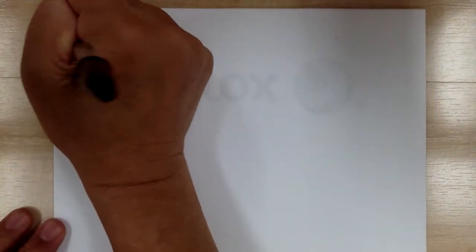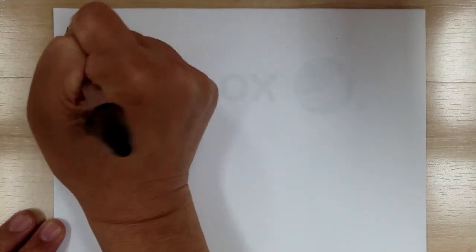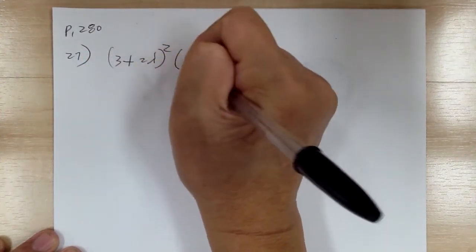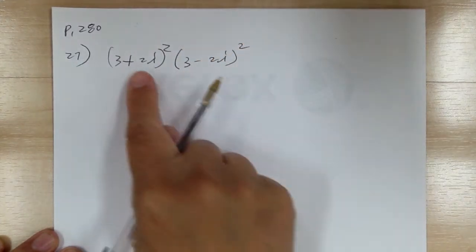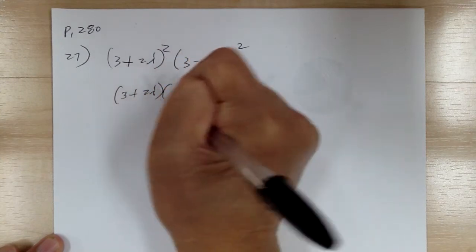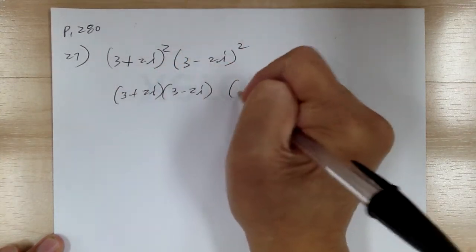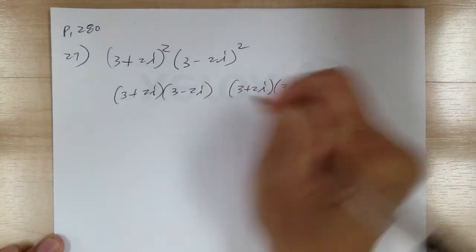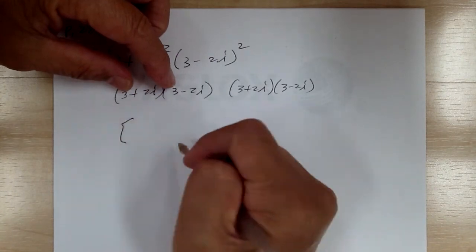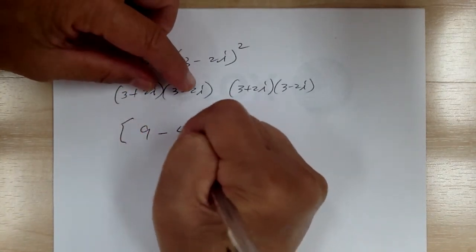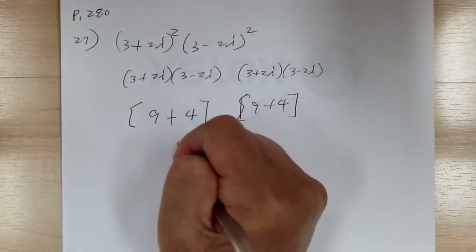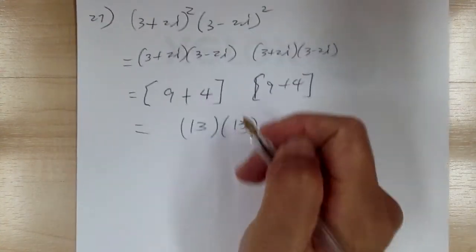Number 27: (3 plus 2i) squared. I don't want to just square this because you'll end up with messy numbers. Notice the conjugate — I'm going to use two sets of conjugates. So conjugate: this gives 9 minus 4, and i times i is negative 1, so it becomes plus, giving 13. And the other factor is the same, giving 13 times 13, which equals 169. Whenever you see the conjugate, always go for the conjugate — it's your best friend.